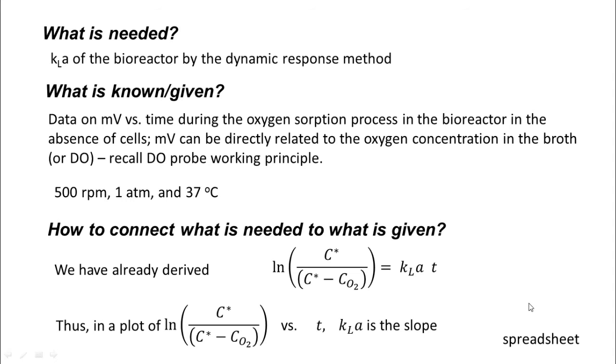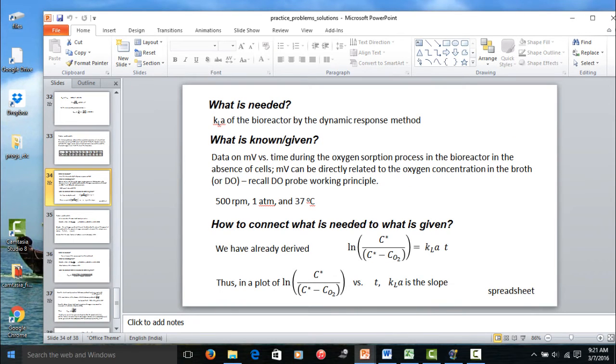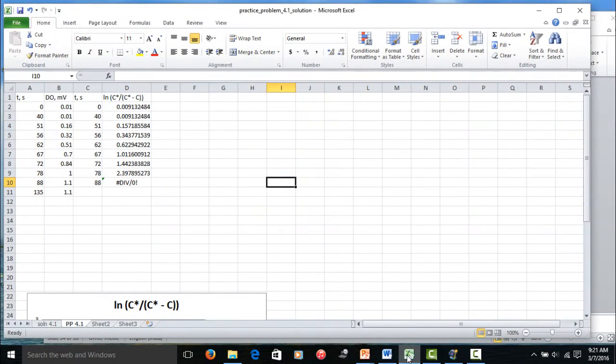And now, I think we will go to the spreadsheet in which the calculations were done. You see here, this is the same data, time versus the dissolved oxygen in millivolts. I am calculating natural log C star by C star minus C.